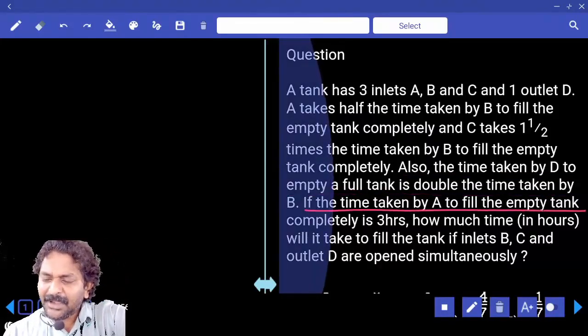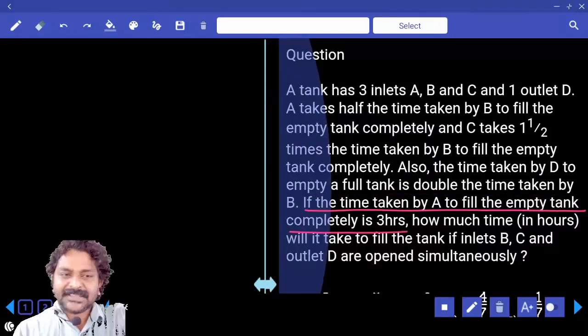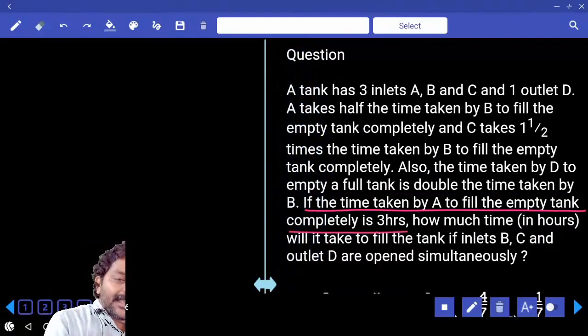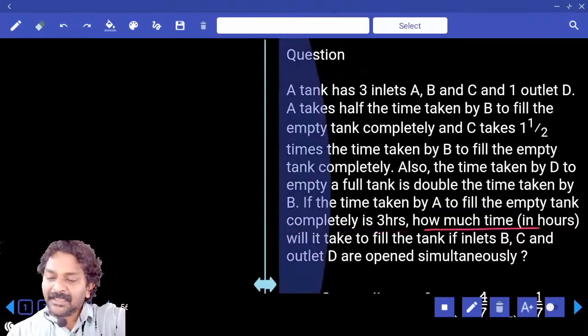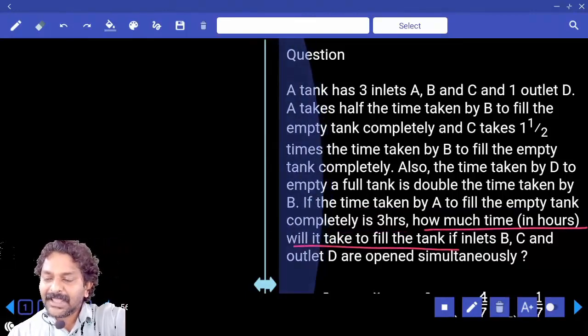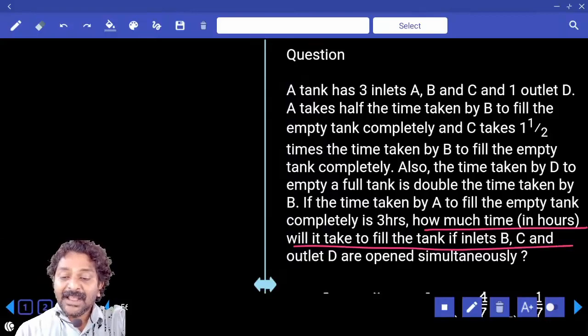If the time taken by A to fill the empty tank completely is 3 hours, that means x equals 3 hours. Correct. How much time will it take to fill the tank if inlets B, C and outlet D are open simultaneously?